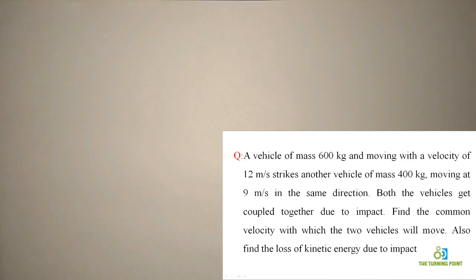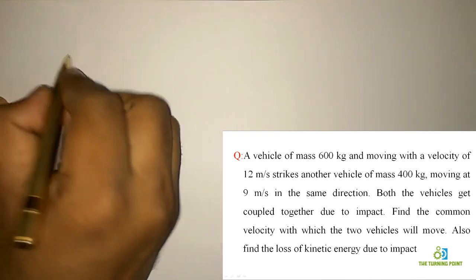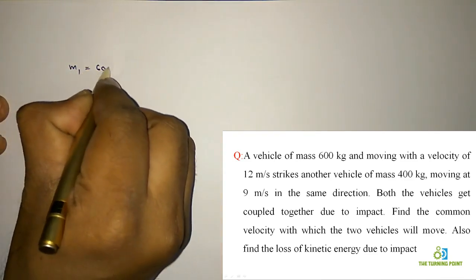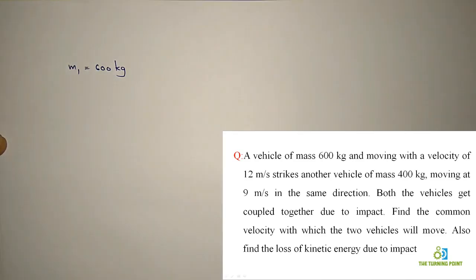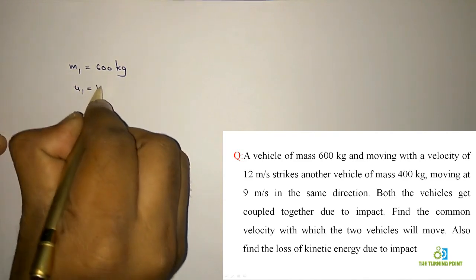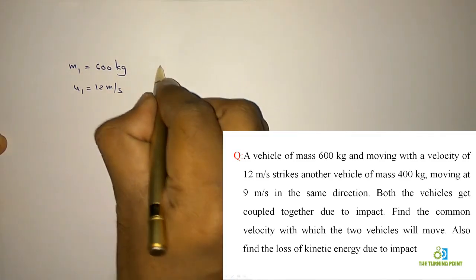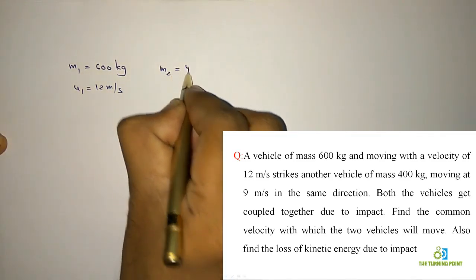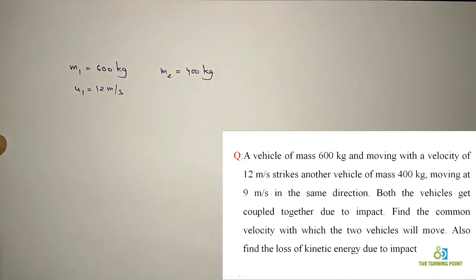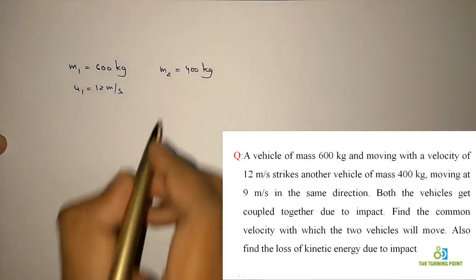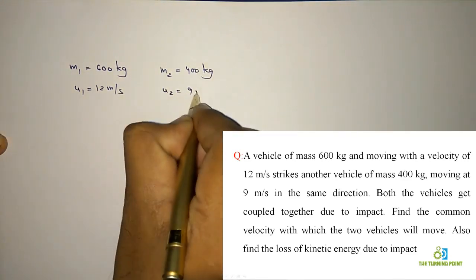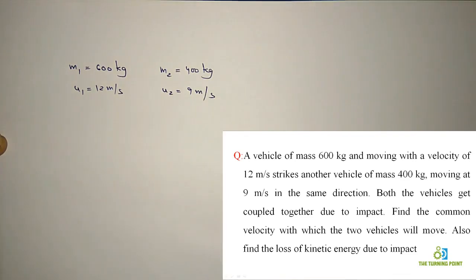First, let us write the given data. Mass of the first vehicle, m1 = 600 kg, and initial velocity of the first vehicle u1 = 12 m/s. Mass of the second vehicle m2 = 400 kg, and initial velocity of the second vehicle u2 = 9 m/s. We need to calculate the common velocity after coupling.